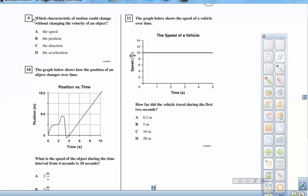This is number nine on the practice problems for the star test. Which characteristic of motion could change without changing the velocity of an object? Okay, so what could change without changing velocity? You have to think about what is velocity.